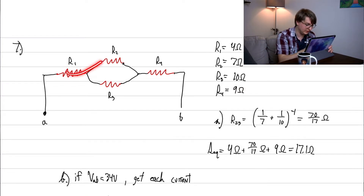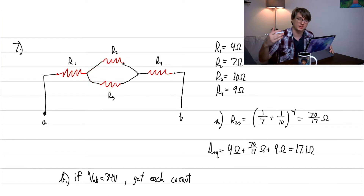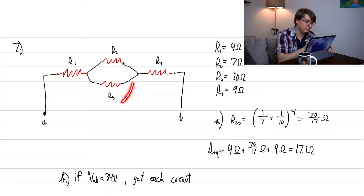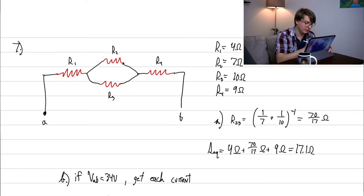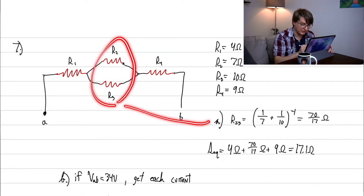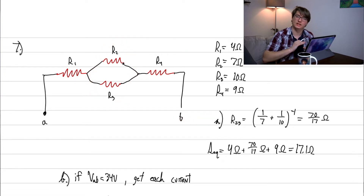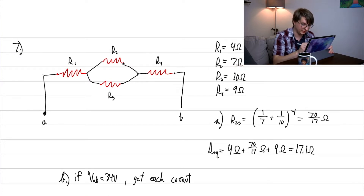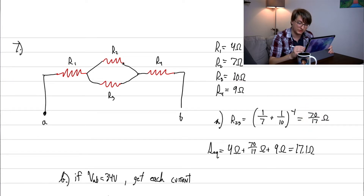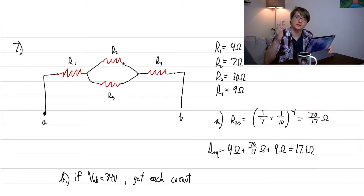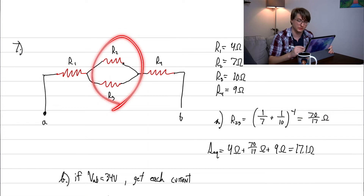We have to go back to the picture to identify what's exactly in series and what's exactly in parallel. Two resistors are obviously in parallel, so we start there and combine those two first. Because they're in parallel we use the inverse rule: 1/7 + 1/10, which gives us 70/17 ohms — a weird number but that's our answer for that combination.